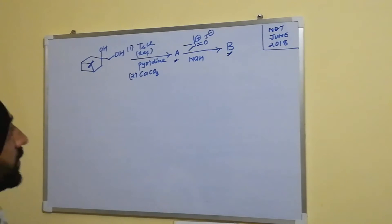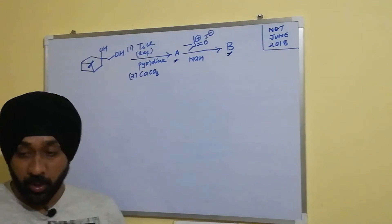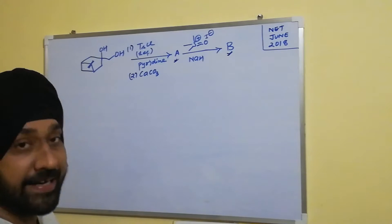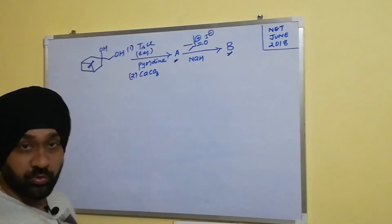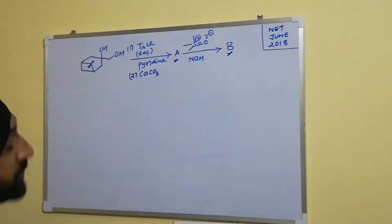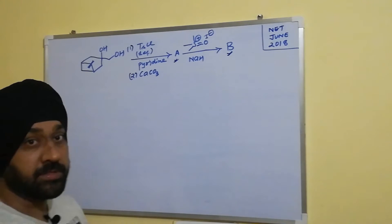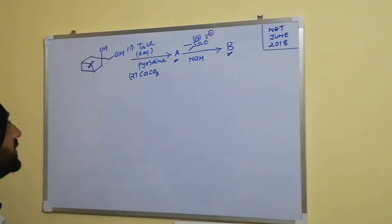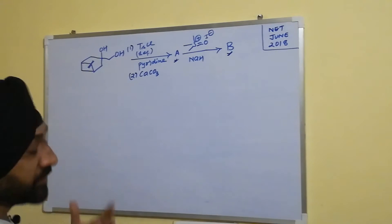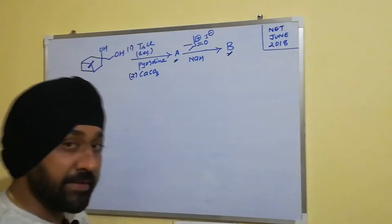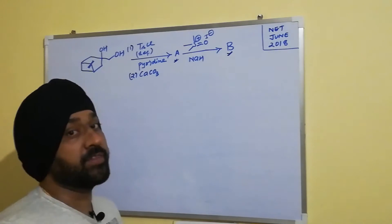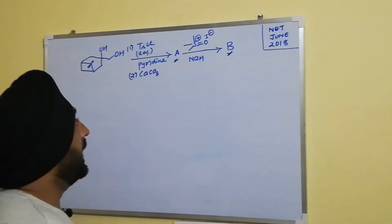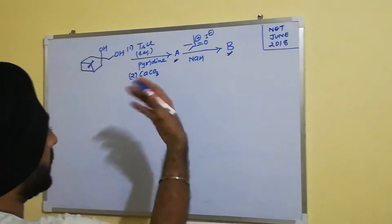Hello everyone, today we are going to look at a few problems which appeared in the NET exam in June 2018. In this problem, we are given a diol which is treated with tosyl chloride, one equivalent of it, followed by treatment with calcium carbonate to give product A.